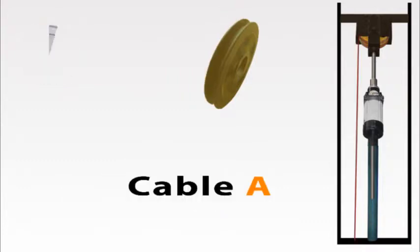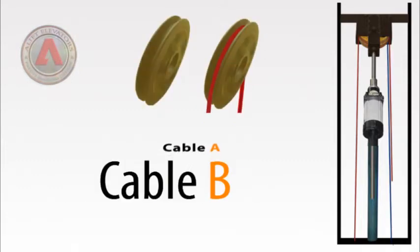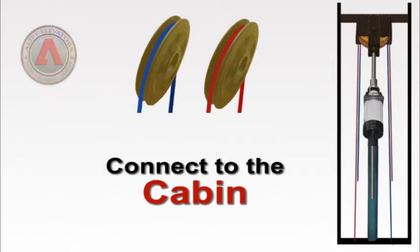Cable A is fixed on the base, wound around pulley A. In turn, cable B is fixed on the base, wound around pulley B, and both ends are then ready to connect to the car frame.